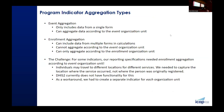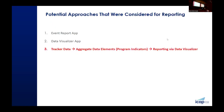For the aggregation types, we had event — where events were coming from a single form — and enrollment, where events were coming from multiple forms. There were various challenges depending on each one. It was not uncommon for an individual to get different services at different locations and even different org units. There were three approaches we could take to reporting: the Event Report app, the Data Visualizer app, or the third one that we took — tracker data to aggregate data elements for program indicators, then using the Data Visualizer to report.